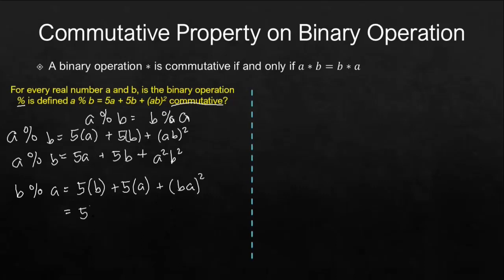5 times b is 5b. 5 times a is 5a. Using the laws of exponents here, we have b squared a squared.